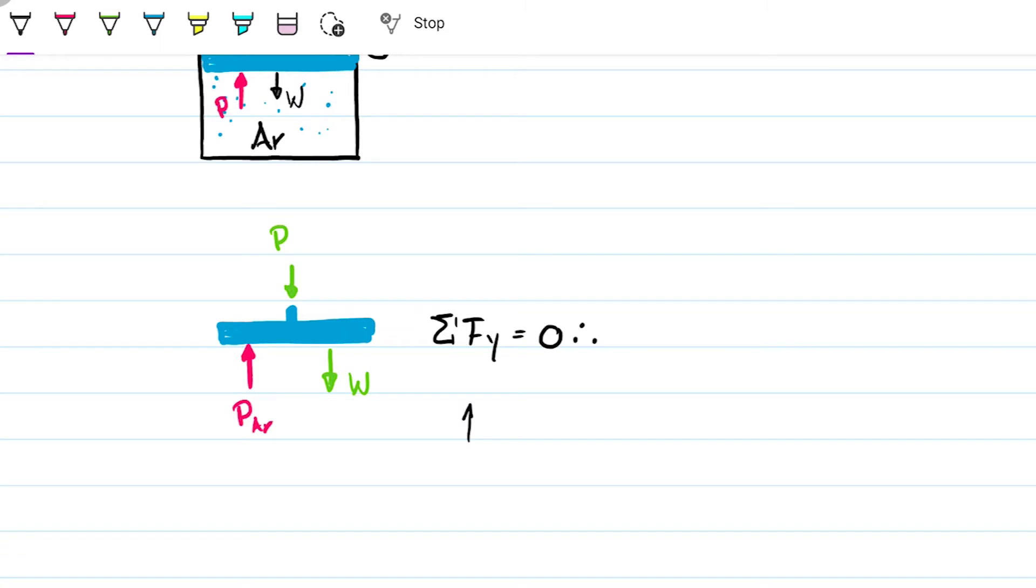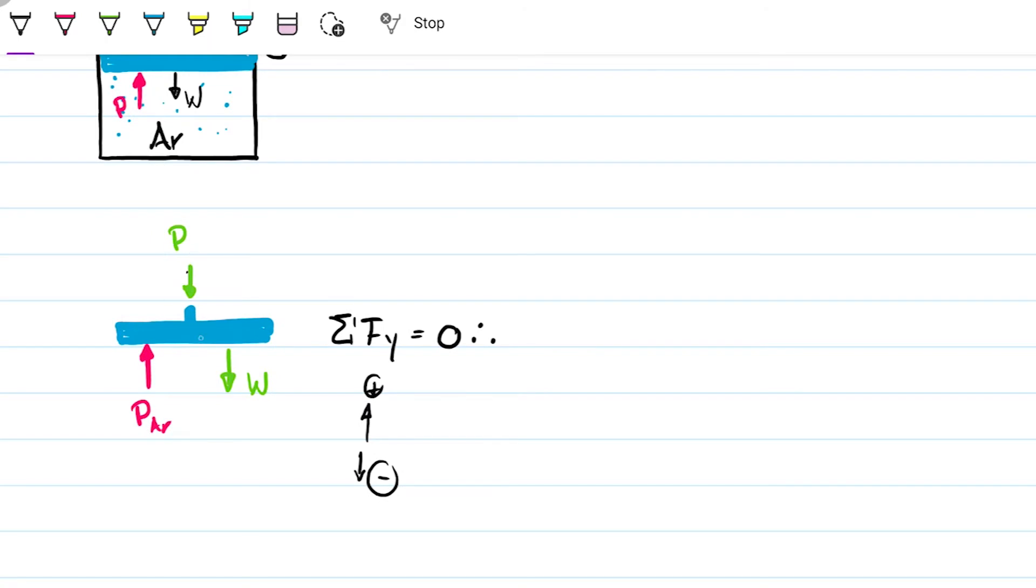So let's go ahead and say that upwards is positive, downwards is negative. We can do whatever. You can choose whatever. End result is going to be the same. So what is positive here is going to be, argon is positive. So pressure of argon, weight is negative, minus weight, minus the atmospheric pressure P_ATM. This needs to be equal to zero.